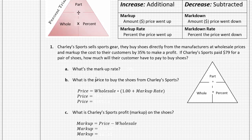This is a multi-step problem, so first, from the word problem, we want to identify what is the markup rate. In our vocabulary, the markup rate is just the percent the price went up. So what's the percent that Charlie Sports is increasing the amount they make their customers pay? Right here, it tells us they mark up the cost by 35%. So 35% is the markup rate.